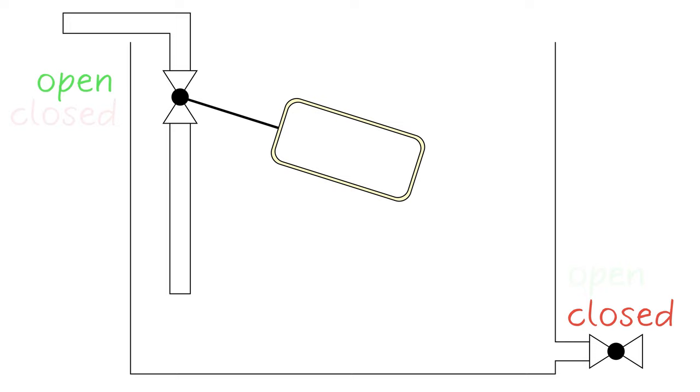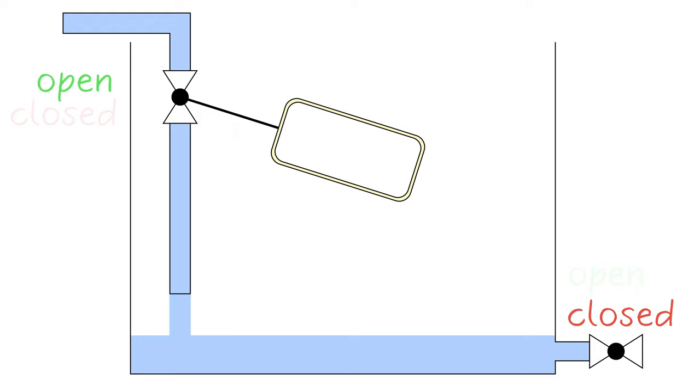The float valve found in the modern flush toilet is used to control the level of water in a tank so that a large volume of water is available quickly when it's needed. Water flows into the empty tank through the open fill valve. As the water fills the tank, a float rises with the water level. As the water reaches the desired level, the float closes the fill valve.